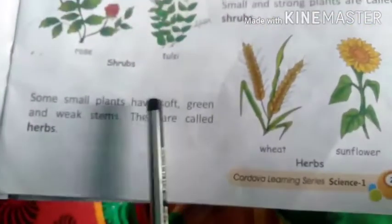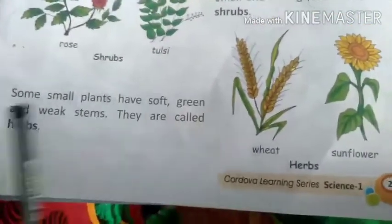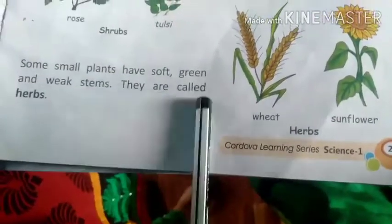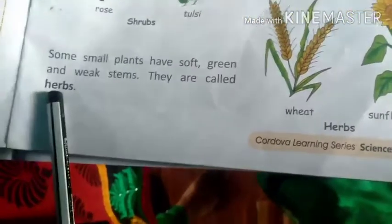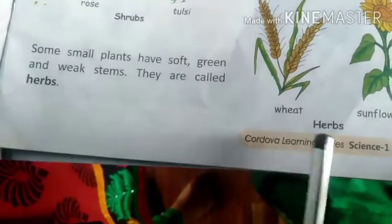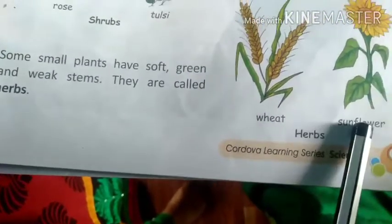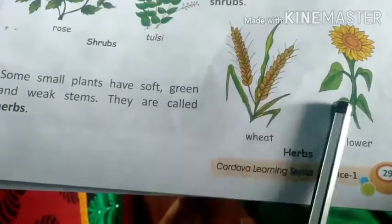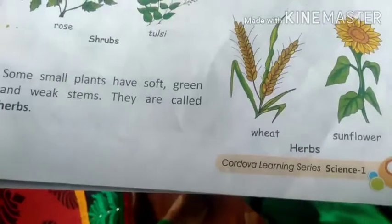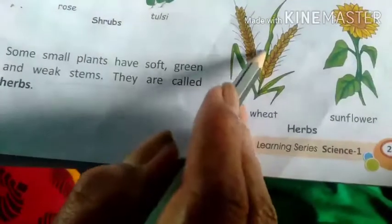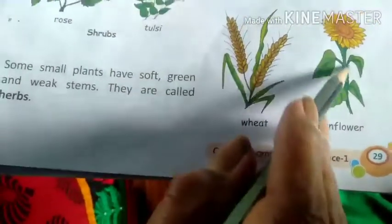Some small plants have soft, green and weak stems. They are called herbs. Examples of herbs are wheat and sunflower. These are herbs — they have soft, weak stems. Their stem is very weak.